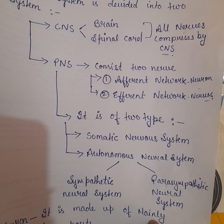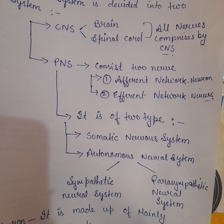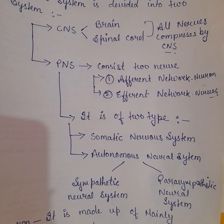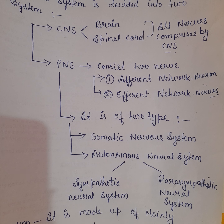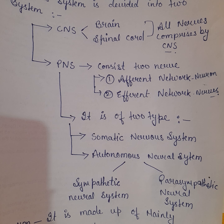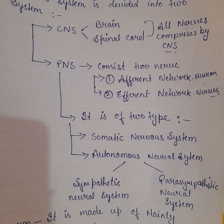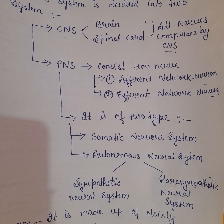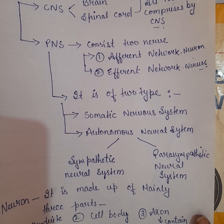Autonomic nervous system do types ka hota hai: ek hai sympathetic nervous system aur ek hai parasympathetic nervous system. Sympathetic nervous system tab work karta hai jab hum kisi aisi condition mein hote hain jo hamare favor mein nahi hoti — jab darr ho, anxiety ho, ya koi pareshani ho. Yeh autonomic nervous system ka hissa hai, jo ki peripheral nervous system ka part hai.